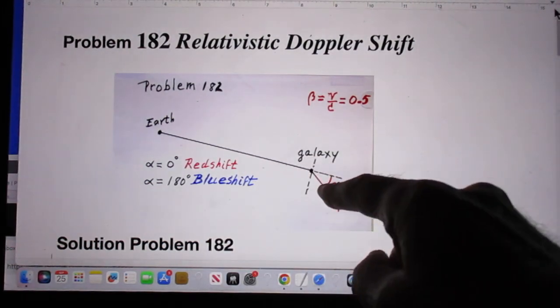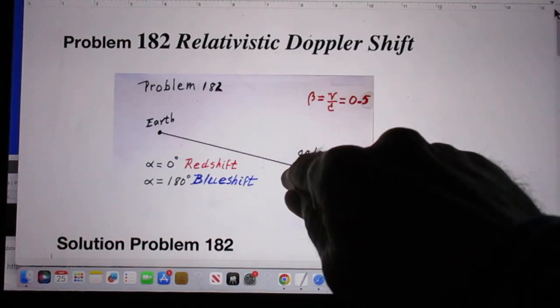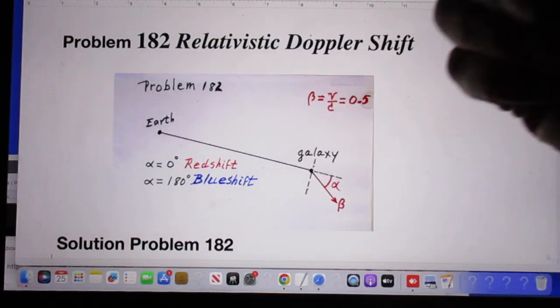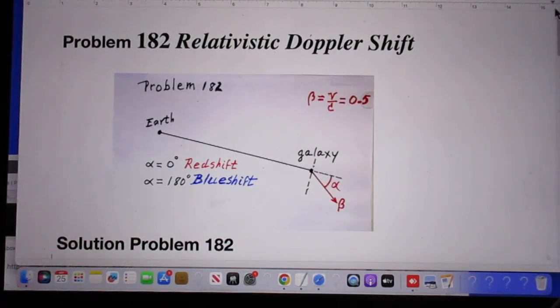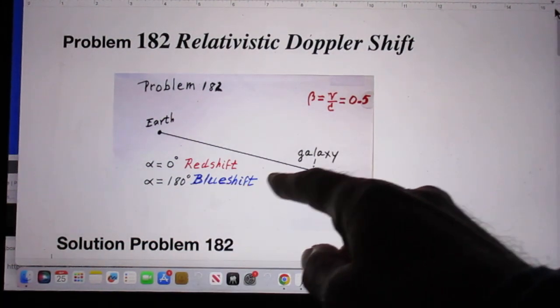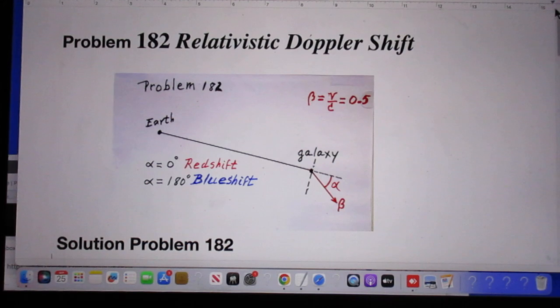When alpha is zero, the galaxy is moving away from us. We always see redshift. When alpha is 180 degrees, the galaxy is always moving towards us, and so we will also always see blueshift.